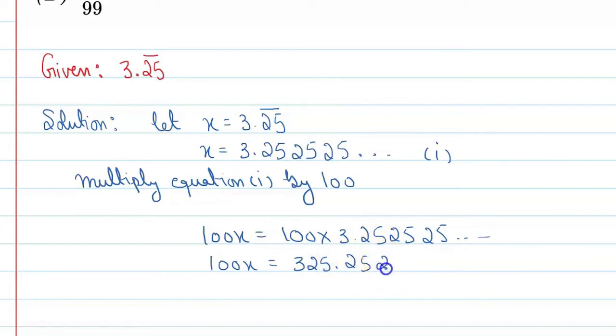In the next step, we will expand this. We can write 100x as 322 plus 3.25 25 25 25 and so on.